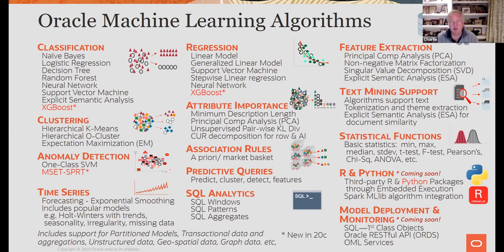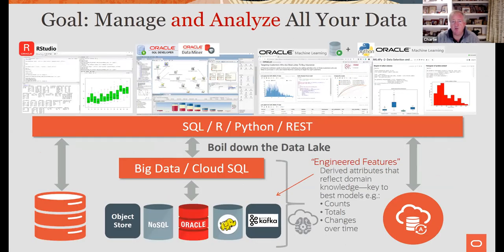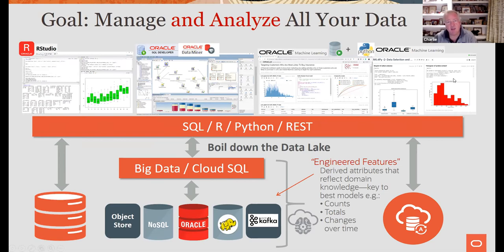If you're on-prem, you use the tools on the left; in the cloud, the tools on the right. In the cloud we have notebooks, and very soon — by end of year — we'll have Python added, which also brings in the auto ML capability. The Python will get ported back down to on-prem, and R will get ported up to the cloud. Cloud is on the right, on-prem or database cloud service on the left.